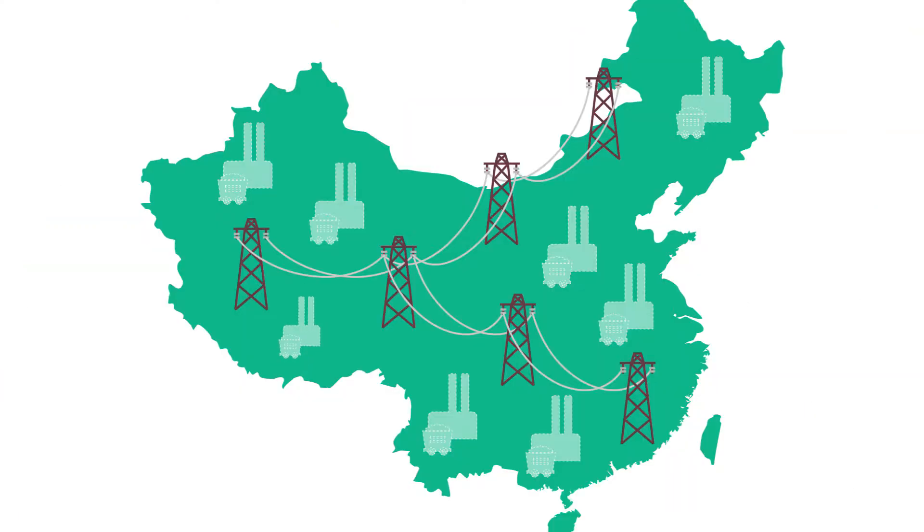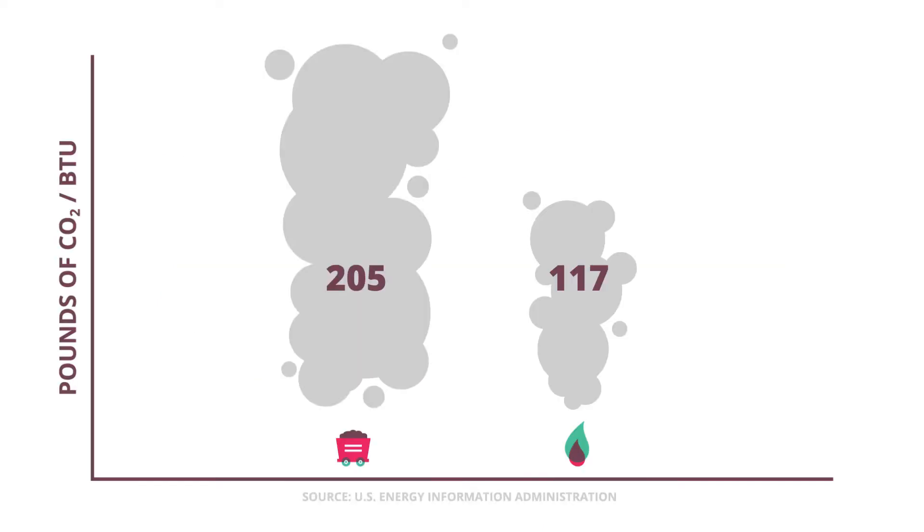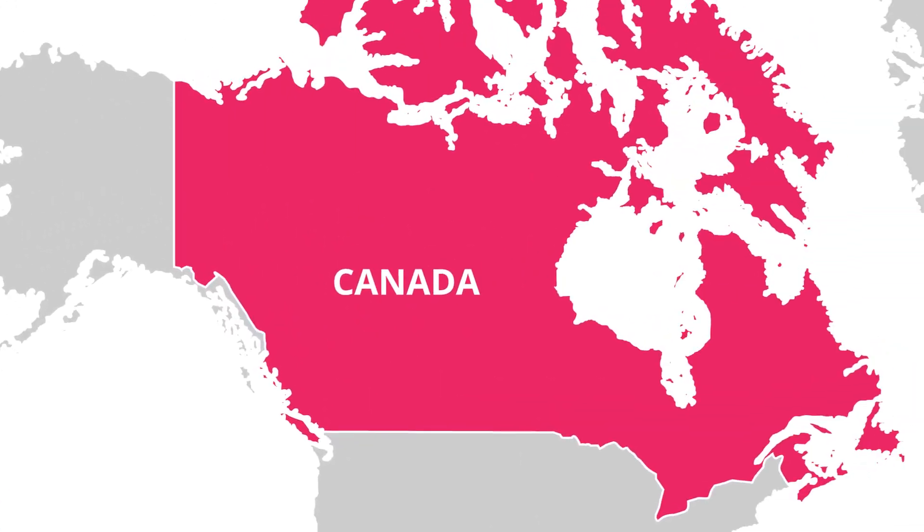That said, China is replacing some of their planned coal-powered plants with natural gas, which emits roughly half the emissions of coal. And we're doing that back here at home, too.